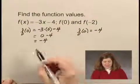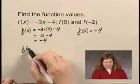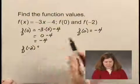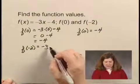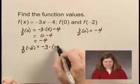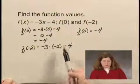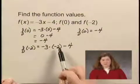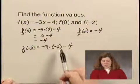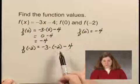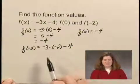To find f of negative 2, we do the same thing. f of negative 2 equals negative 3 times negative 2 minus 4. Notice that I used parentheses when I substituted the negative 2 for the x. If you always use parentheses, that will help, especially with negative numbers. It's a good idea to do whenever you substitute.